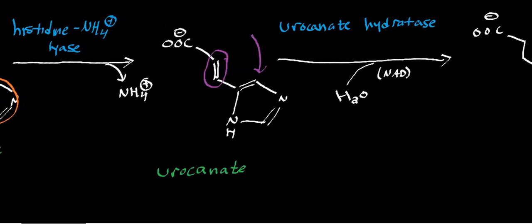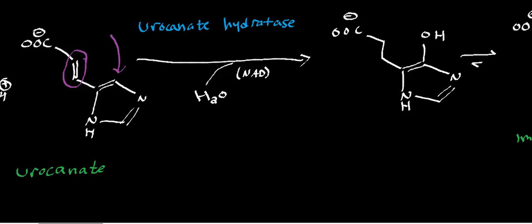Urocanate is going to be consumed by urocanate hydratase. This enzyme, effectively, is going to be an addition reaction to an alkene, and specifically, it's going to be a hydration of an alkene. Notice right here I said that it's an NAD-dependent enzyme. We also have a mechanism video for this enzyme, and what I want to mention is that even though it's NAD-dependent, we're not going to get a net NADH out of it.